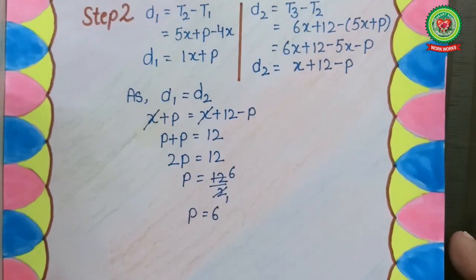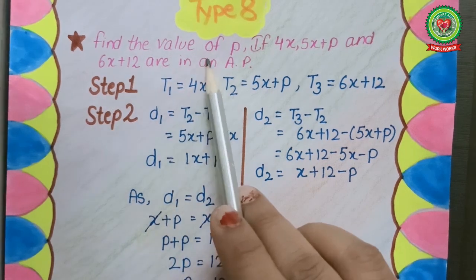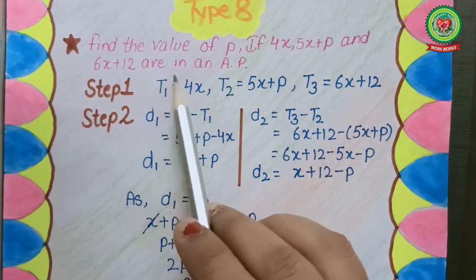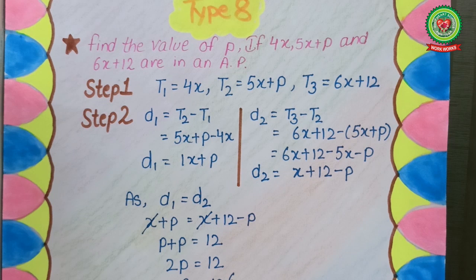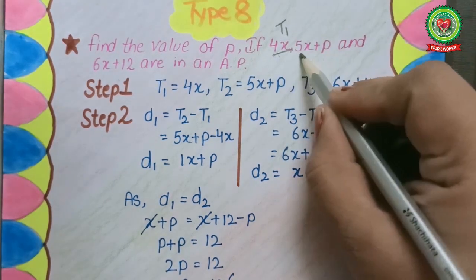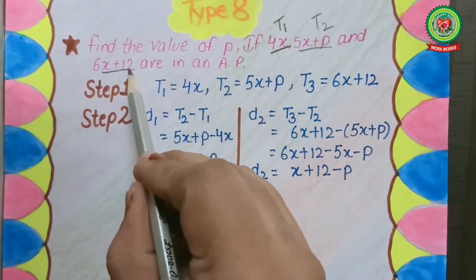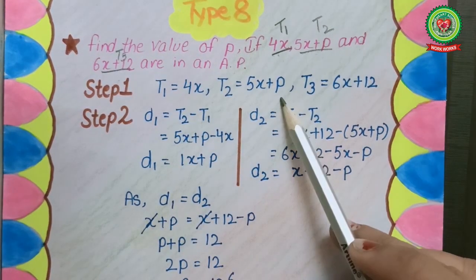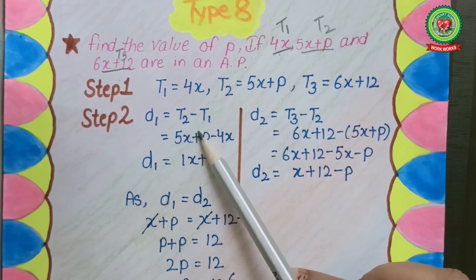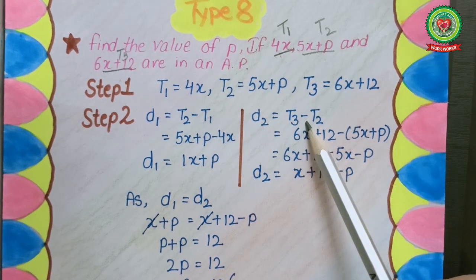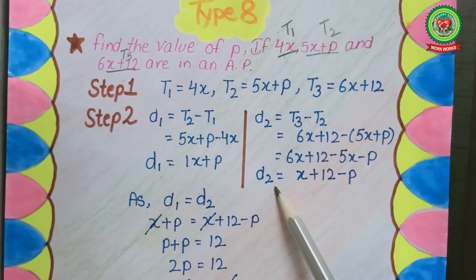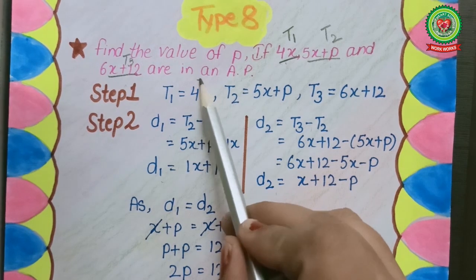Next, the second type: find the value of p if 4x, 5x plus p, and 6x plus 12 are in AP. Again we have three terms with unknown variables. The first term is 4x, second term is 5x plus p, and third term is 6x plus 12. Step one: write down the terms. Step two: since there are unknown variables, we apply the common differences d1 and d2 for consecutive terms. Since the sequence is in AP, d1 is equal to d2.